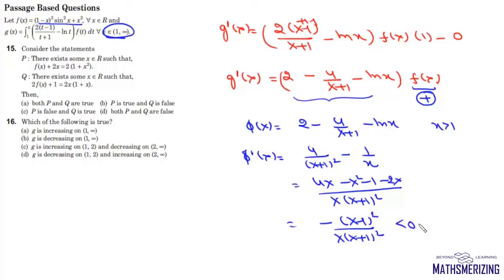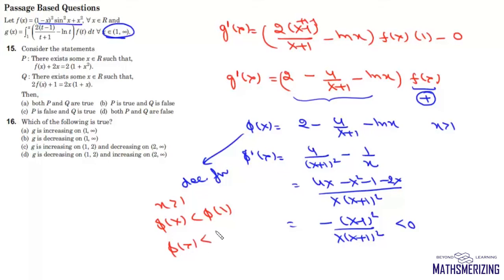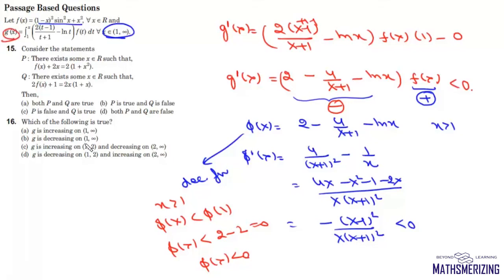This is always less than 0, meaning φ(x) is a decreasing function. Since x is greater than 1 and φ is decreasing, φ(x) is less than φ(1). Since φ(1) equals 2 minus 2 minus 0 equals 0, we have φ(x) less than 0 for all x greater than 1. Therefore g'(x) is less than 0 for all x greater than 1, so g(x) is always decreasing on (1, infinity). That is option B.